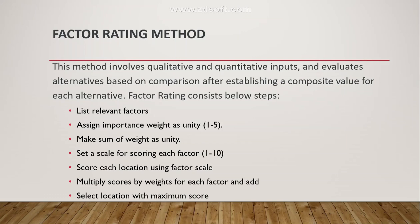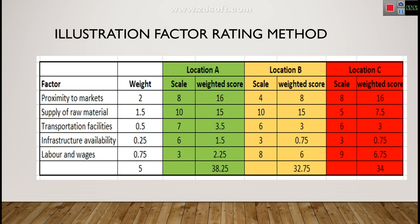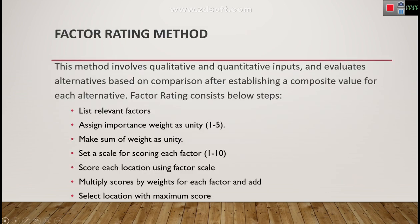Let's understand the Factor Rating Method with the help of a table showing data for three different plant locations: A, B, and C. According to the steps, the first basic step is to list down the relevant factors based on the type of product, manufacturing system, and industry we are in.